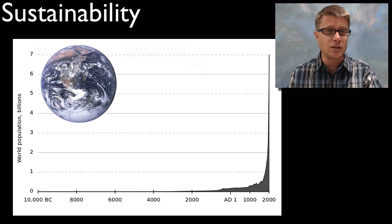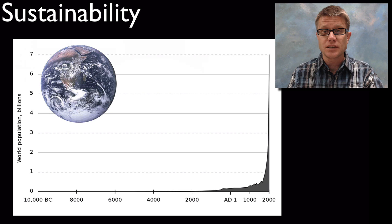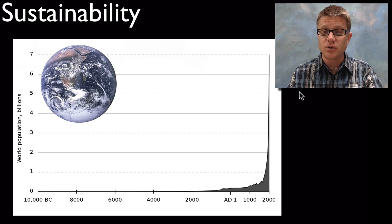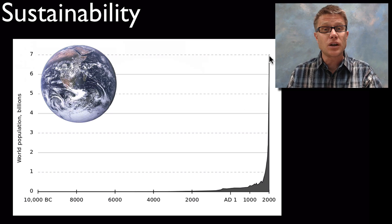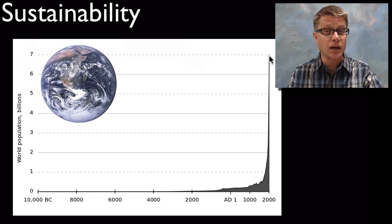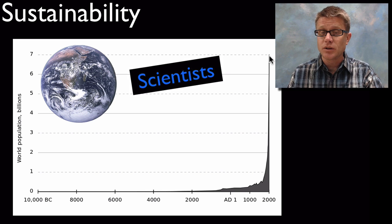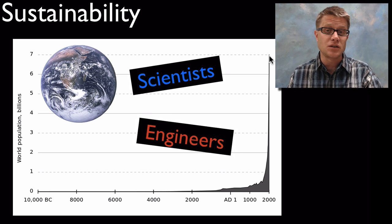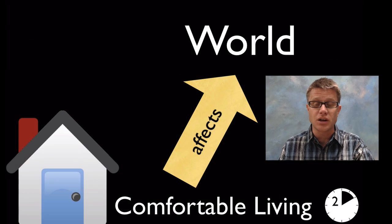This brings up the important idea of sustainability. If we look at the human population over the last 10,000 years we see exponential growth — an explosion of people on our planet. We now exceed 7 billion people. We're going to have to make that sustainable, making sure the resources we have on our planet will last through future generations. Scientists are able to see what's happening into the future, and engineers are going to be able to design sustainable systems over time.